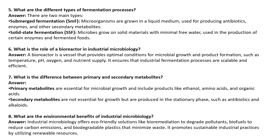What is the difference between primary and secondary metabolites? We do screening for secondary metabolite-producing microbes and antibiotic-producing microbes. Primary metabolites are essential for microbial growth and include products like ethanol, amino acids, and organic acids. Secondary metabolites are not essential for growth but are produced in the stationary phase, like antibiotics and alkaloids. When you mention the stationary phase, you may get a follow-up question on the bacterial growth curve.